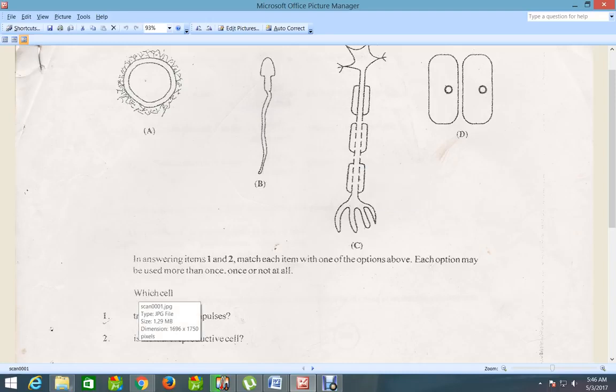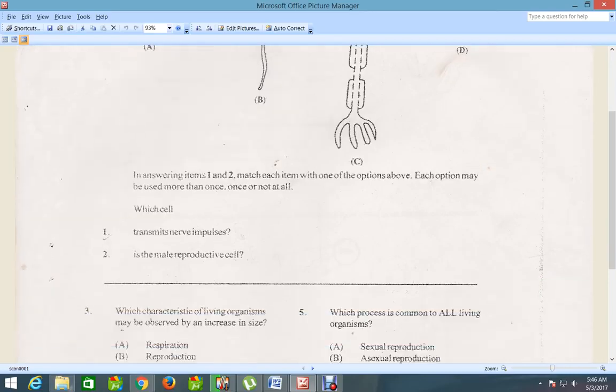Question number 2, which cell is the male reproductive cell? And the answer for that is B. So this one actually looks like the sperm cell. As for A, A actually looks like the ovum or the egg cell in the female.